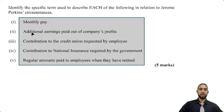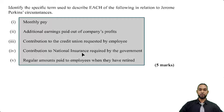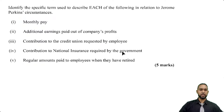So it says: monthly pay; additional earnings paid out of company profits; contribution to the credit union requested by employee; contribution to national insurance required by the government; and regular amounts paid to employees when they have retired.